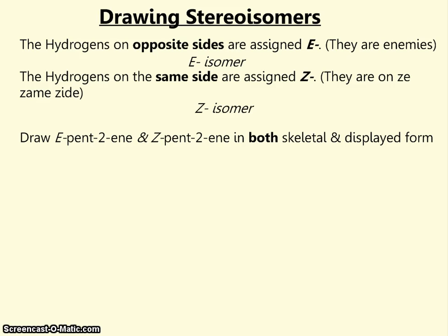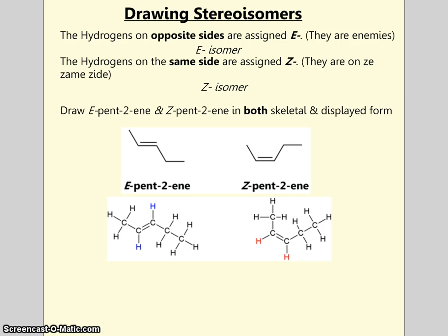Finally, can you draw the isomers of E-pent-2-ene and Z-pent-2-ene in both skeletal and displayed form? Hopefully you will have got structures that look very similar to what I have here. So that brings to a close this video on stereoisomers. Thank you for watching.